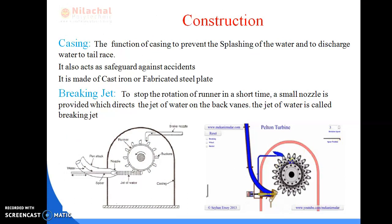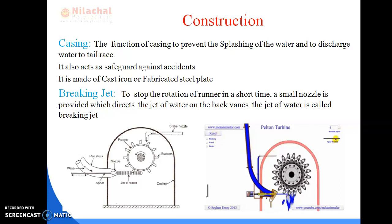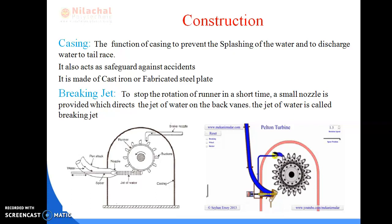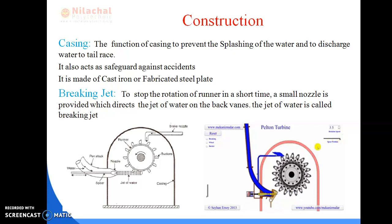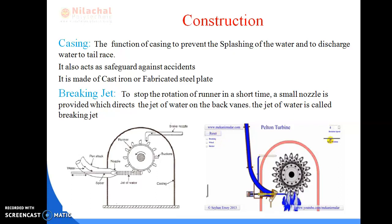Next, we will study the casing. The casing is the arrangement provided for the turbine unit that surrounds it. The water obtained from the nozzle strikes upon the buckets of the turbine runner. During this time, there is splashing of water, which may go outside. By providing a casing, this splashing of water can be prevented. The casing also acts as a safeguard against accidents, since the velocity is much higher and shocks are produced on the blades of the runner.